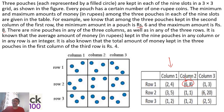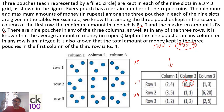This is a big hint. If the average is an integer, the total should be a multiple of nine — because total equals average times number of pouches, which is nine. So every row and every column, the total should be a multiple of nine.